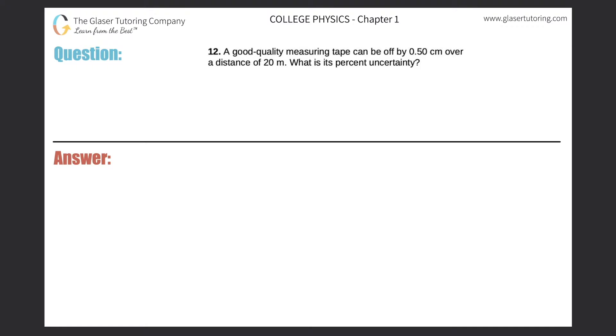Number 12. A good quality measuring tape can be off by 0.5 centimeters over a distance of 20 meters. What is its percent uncertainty?